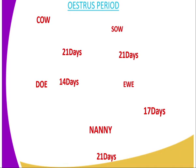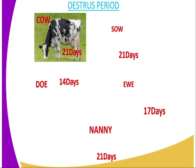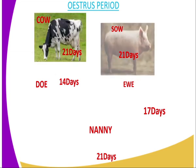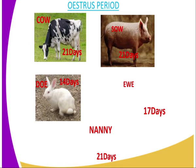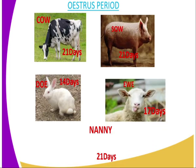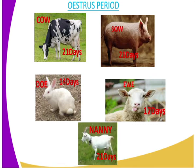Then we have the oestrous period for different animals kept on the farm. For a cow, the oestrous period is 21 days. For a sow, that is also 21 days. For a doe — the female rabbit — that is 14 days. For a ewe, it takes a duration of 17 days to repeat again. And finally, for the nanny — that is the she-goat — it normally takes 21 days for the cycle to repeat again.